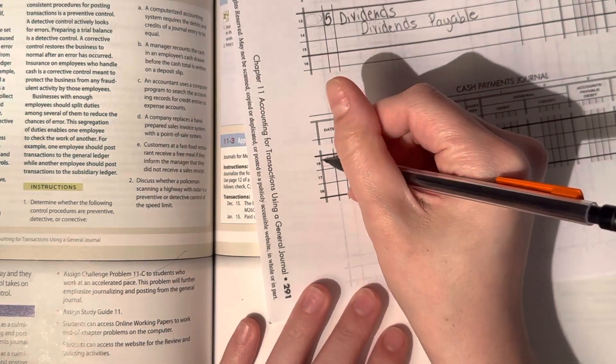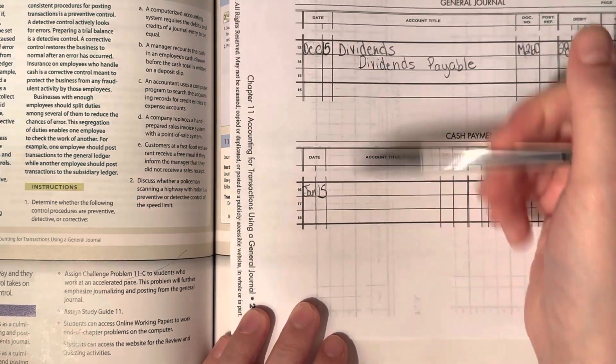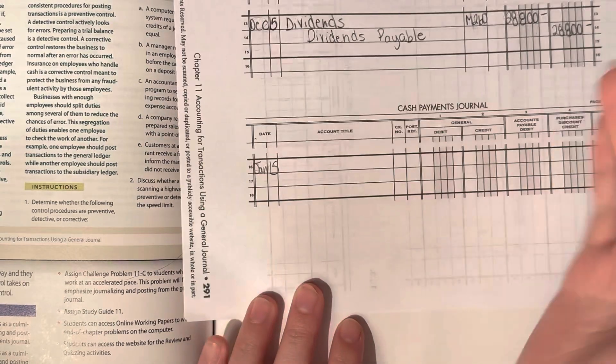You don't have to write January, but if you do, it's okay. Because technically what they're saying is this is a continuous journal and the date was already written on the top.